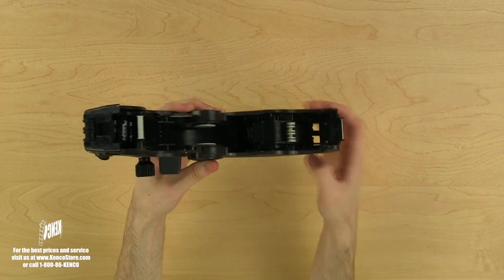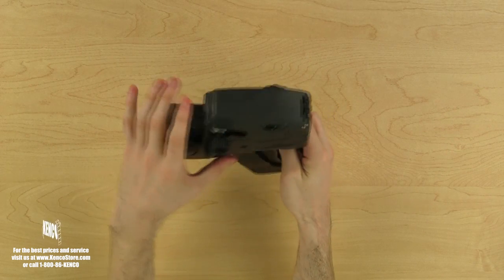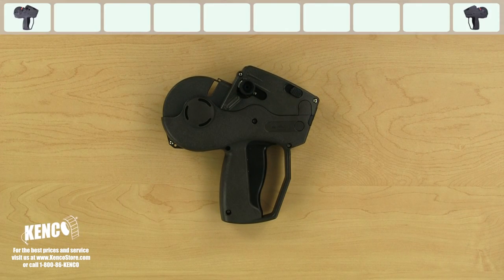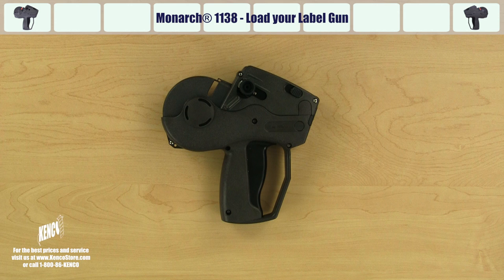It's important to note that the print location on the Monarch 1138 series cannot be adjusted. Now that we are more familiar with the various components, let's learn how to quickly and properly load the Monarch 1138 series labeler.